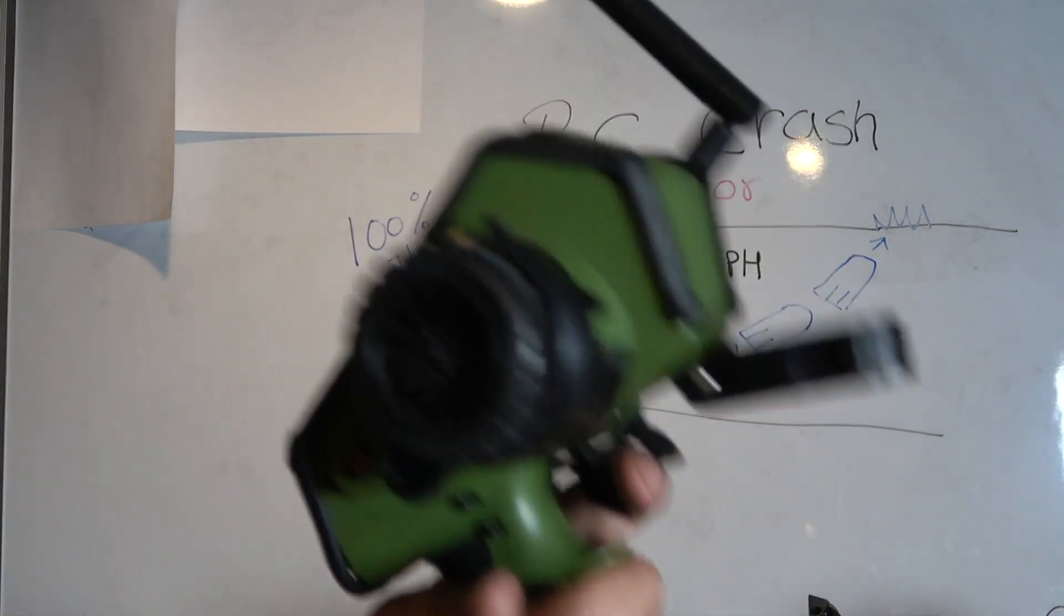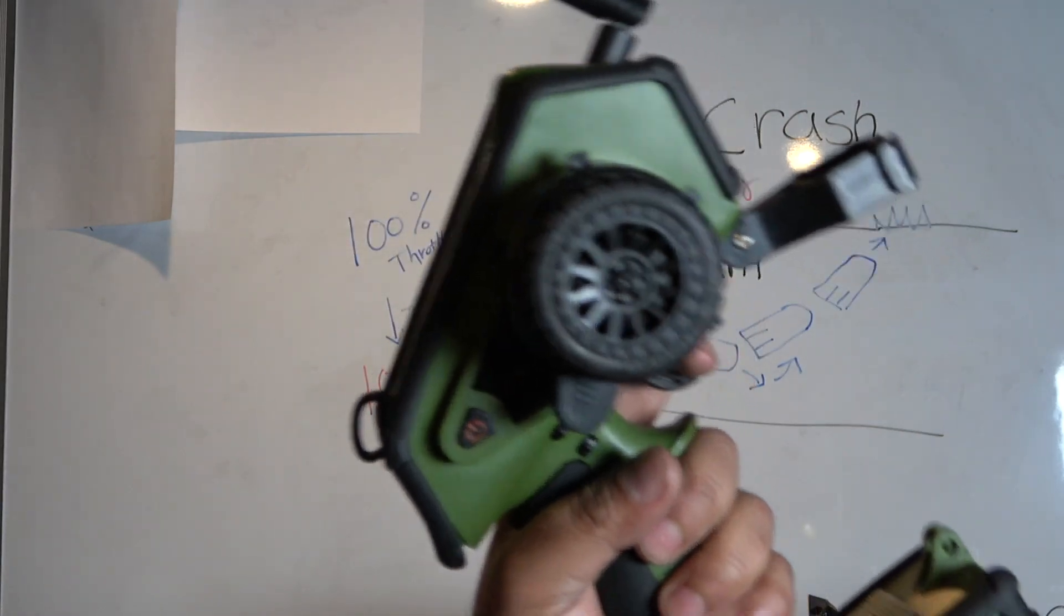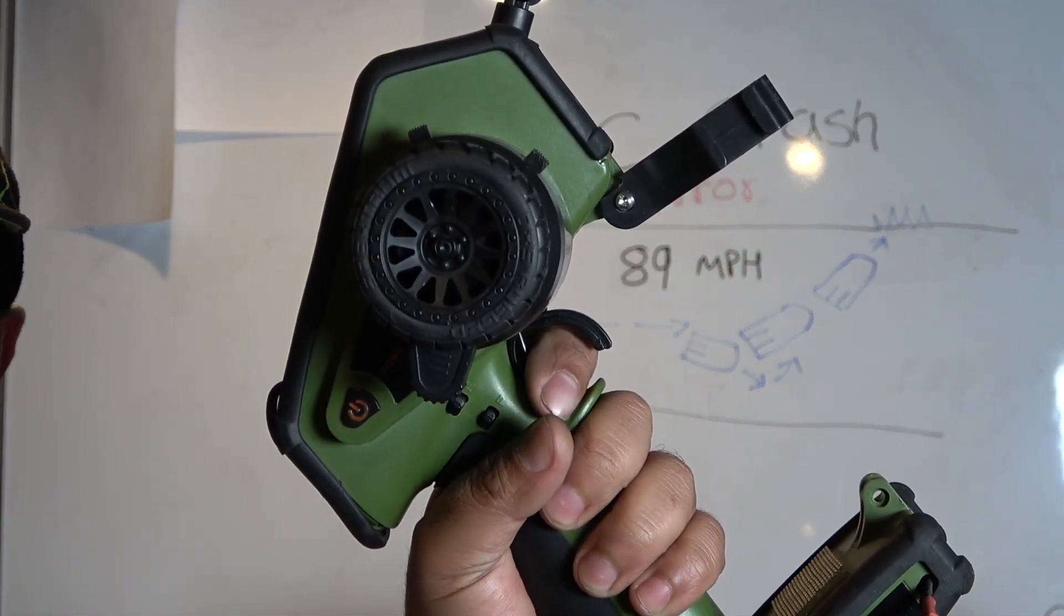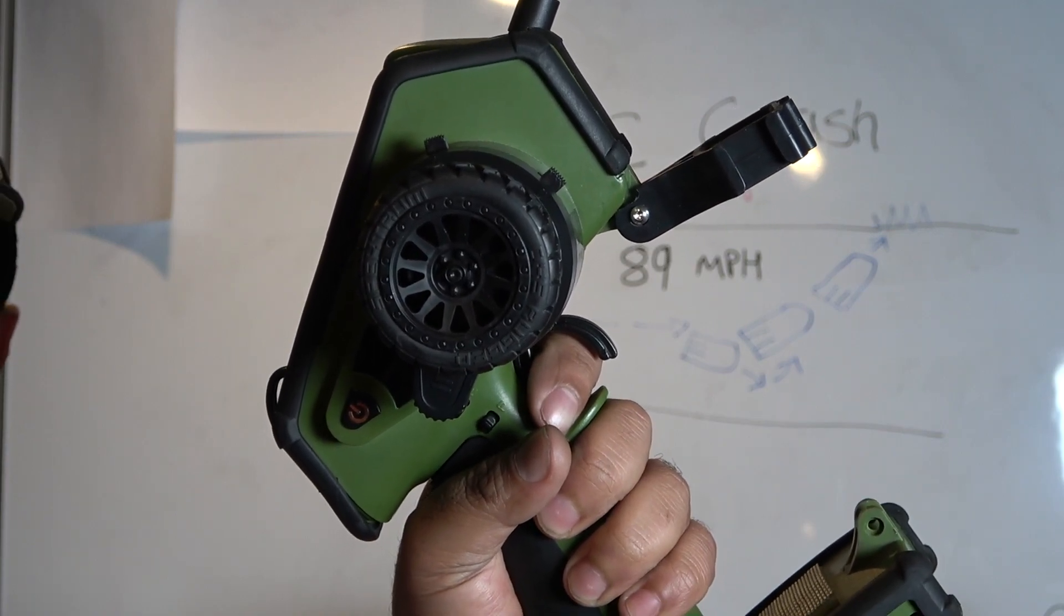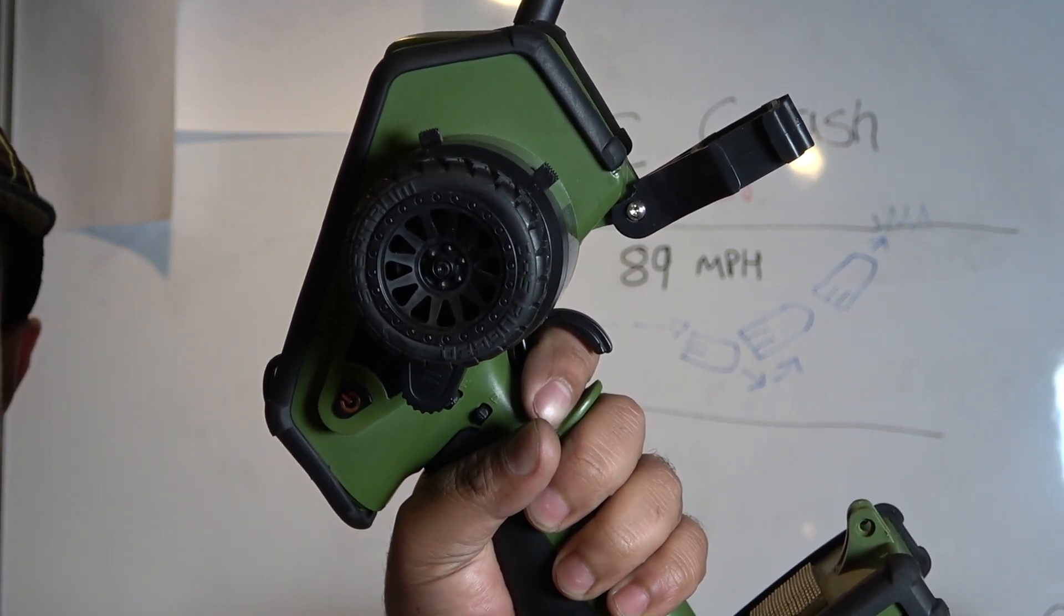So the right thing would have been to push the trigger full throttle when I needed full throttle. When it's time to stop, I should have let go the trigger to neutral position.